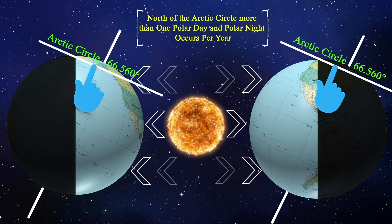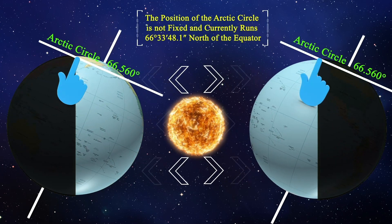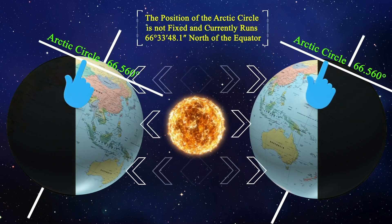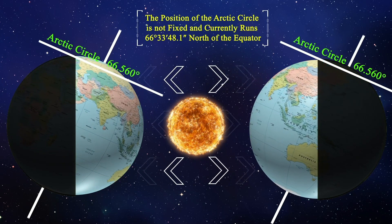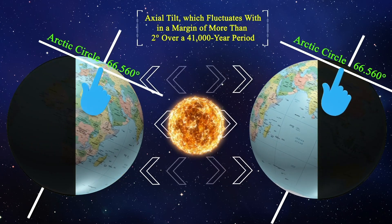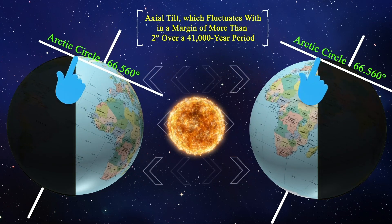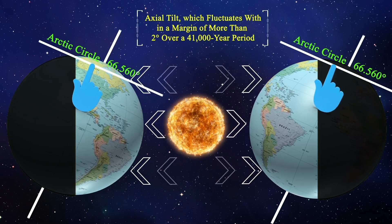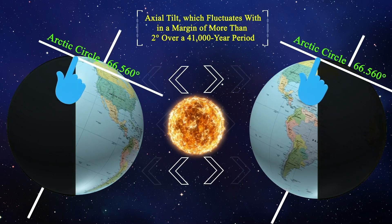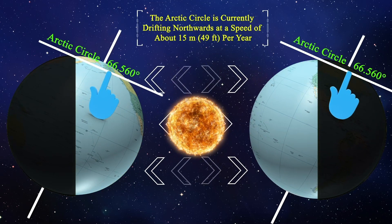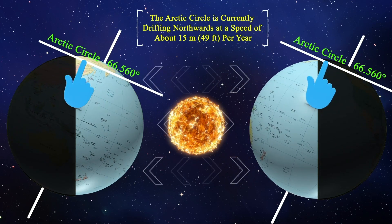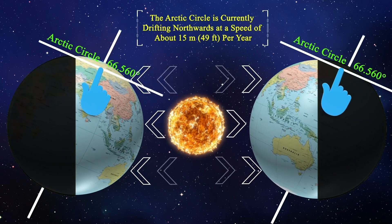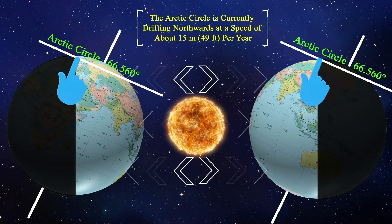North of the Arctic Circle, more than one Polar Day and Polar Night occurs per year. The position of the Arctic Circle is not fixed and currently runs 66 degrees 33 minutes 48.1 seconds north of the equator. Its latitude depends on the earth's axial tilt, which fluctuates within a margin of more than 2 degrees over a 41,000-year period due to tidal forces from the orbit of the Moon. Consequently, the Arctic Circle is currently drifting northwards at a speed of about 15 meters (49 feet) per year.